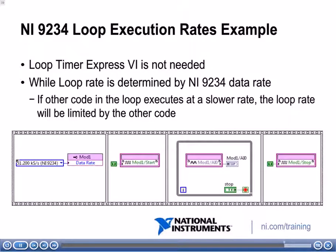One thing to keep in mind: the data rate property sets how often the module will acquire data. However, if the while loop has other code that takes longer to execute, that will slow down the loop rate — the loop rate is being slowed by the other code inside that loop. In this case, we don't have any other code, so the while loop will execute at 51.2 kS per second. Now you can implement loop execution rate using the compact RIO module data rate. Next, we will describe while loop considerations on an FPGA VI.